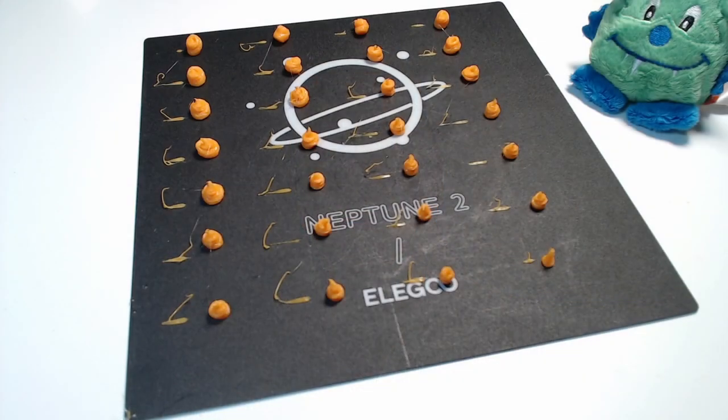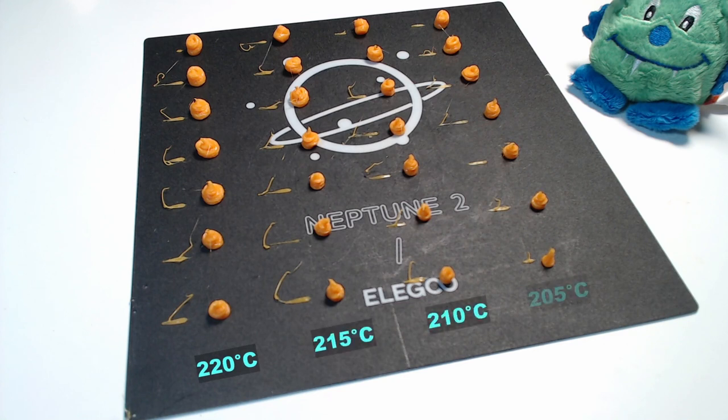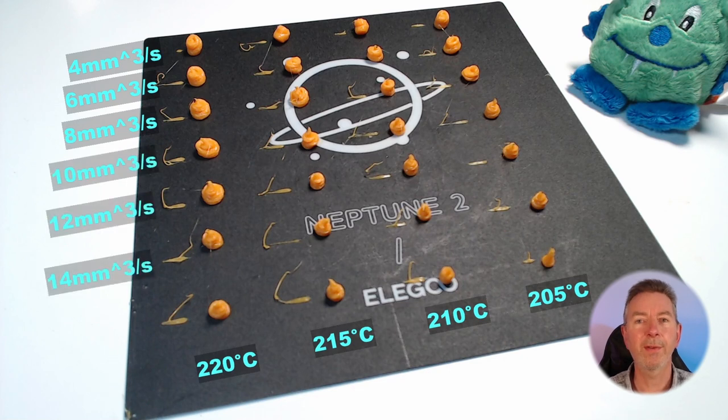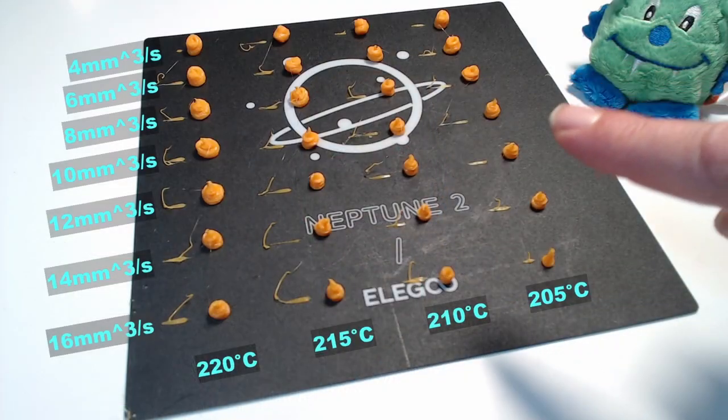This is what it looks like. The printing temperature decreases by 5 degrees Celsius in each column from left to right, starting from 220 degrees to 205 degrees. The rows represent a flow rate increasing from top to bottom by 2 cubic millimeters per second, starting with 4 and going up to 16 cubic millimeters per second. By looking at the blobs, it's visible that the extrusion is getting into some trouble at lower temperatures and higher flow rates.